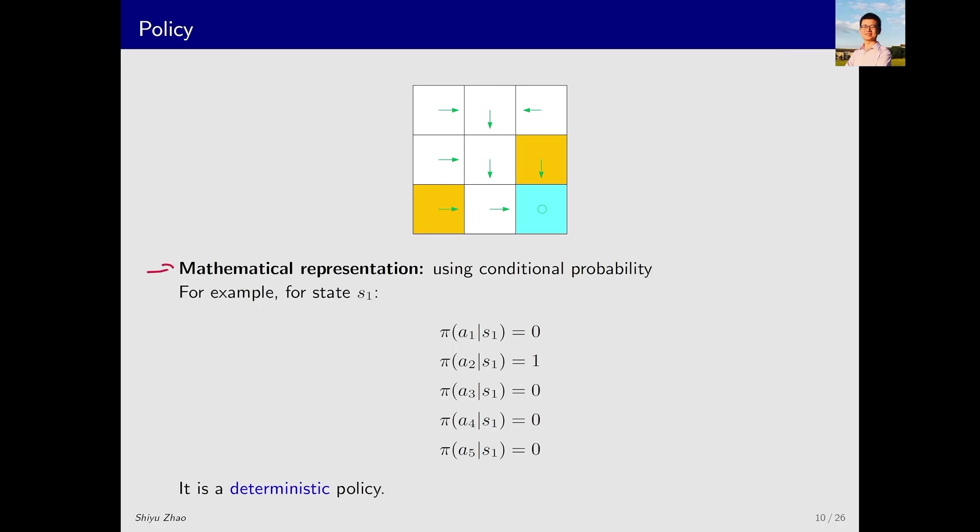In addition to arrows, we can use a mathematical expression, conditional probability, to describe policies. Typically, pi usually refers to the mathematical constant pi. But in the context of reinforcement learning, pi usually denotes policy. What exactly is pi? It is a conditional probability that determines the likelihood of taking any action in any given state. For instance, for state S1, the probability of taking action A1 is 0, while the probability of taking action A2 is 1. The probabilities for all other actions are 0. The sum of probabilities for all possible actions in a given state must equal 1. This is an example of a policy. Here, we have only discussed state S1, but there are states S2 to S9 as well. For every state, there must be a corresponding policy.